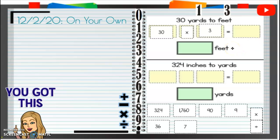So 30, 60, 90, our answer will be 90. 90 feet. 30 yards is the same as 90 feet. So I am going to type in that box 90 to be 90 feet.